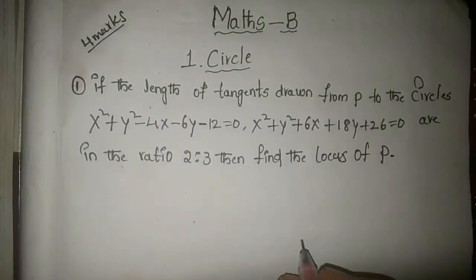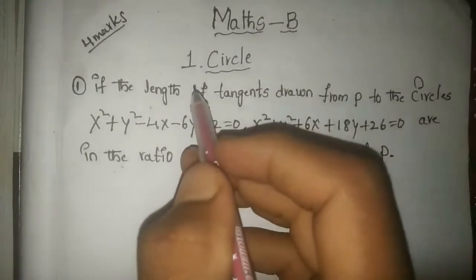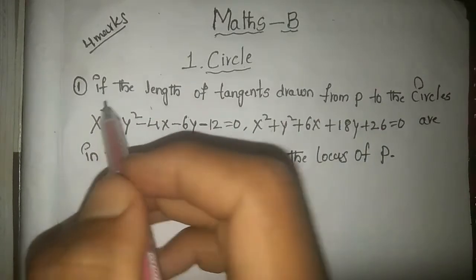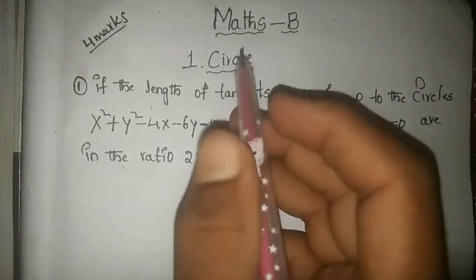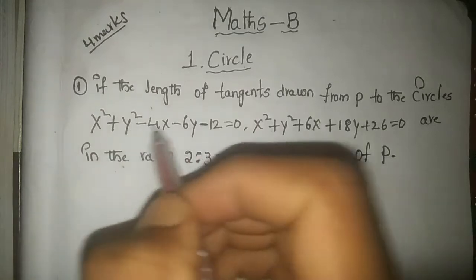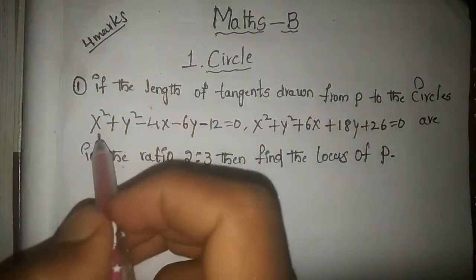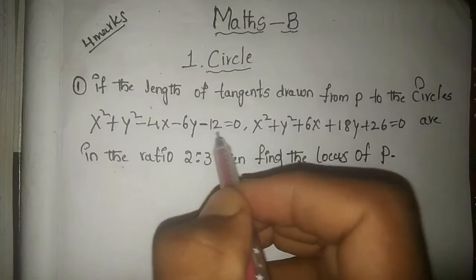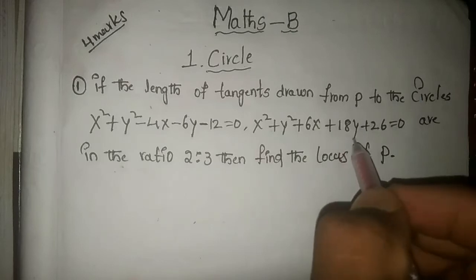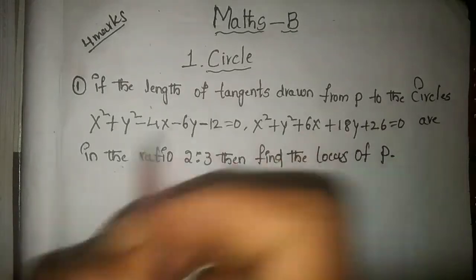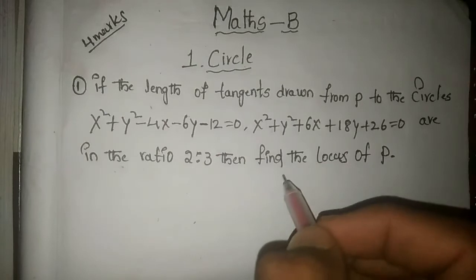Hello friends, today in this video we are solving second year mathematics B subject, first lesson: Circle. This is a marks-important question. The given question is: the length of the tangent drawn from P to the circles x² + y² - 4x - 6y - 12 = 0 and x² + y² + 6x + 18y + 26 = 0 are in the ratio 2:3. Find the locus of P.